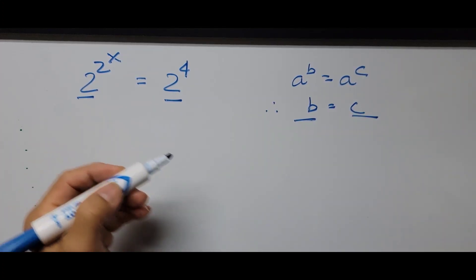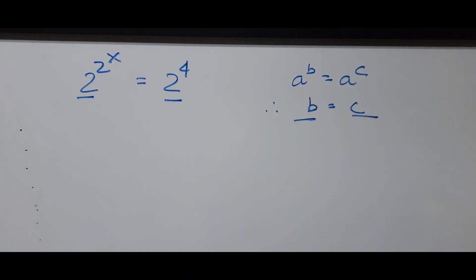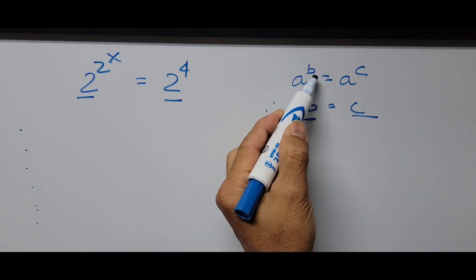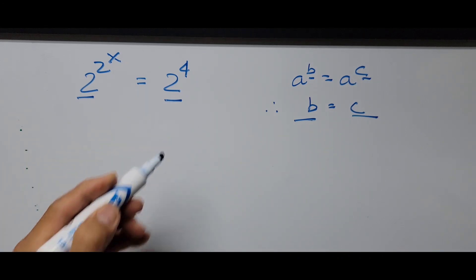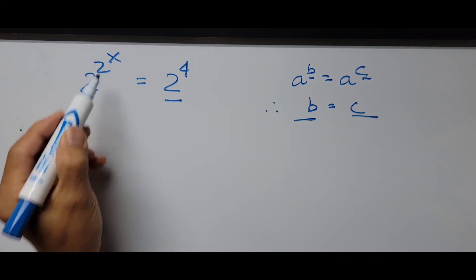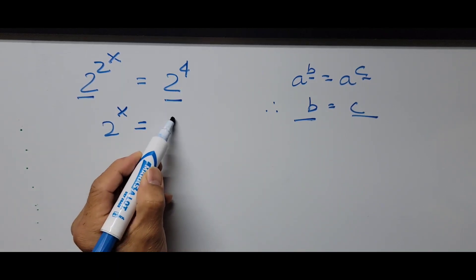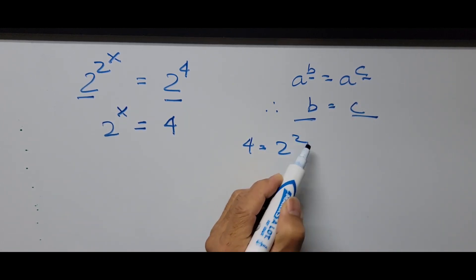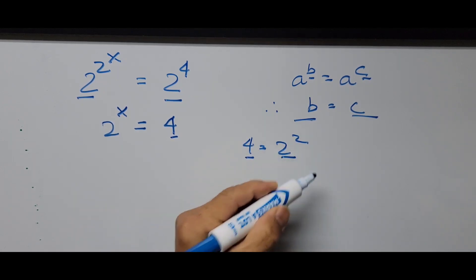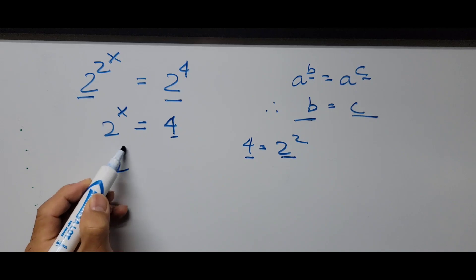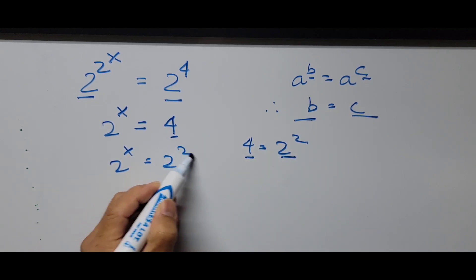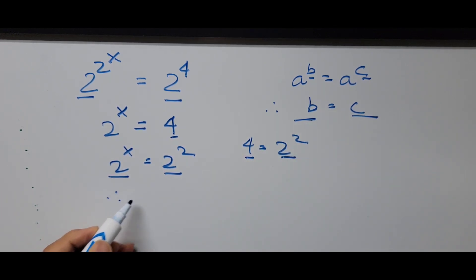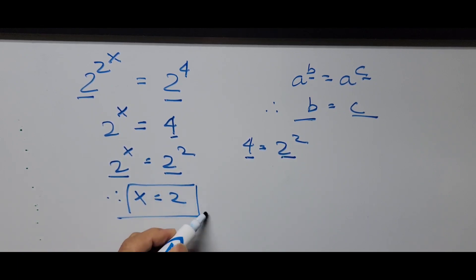Applying the same exponent rule once more — if a^b = a^c then b = c — we note that 4 can be written as 2 squared. So the equation becomes 2 to the power of x equals 2 squared, and therefore x equals 2. That's our final answer.